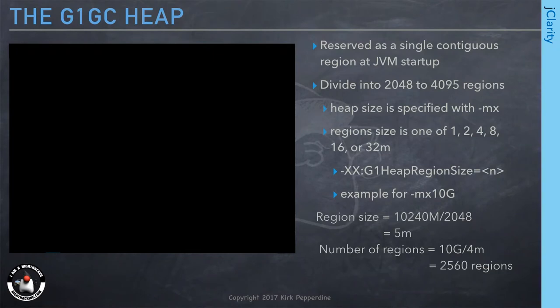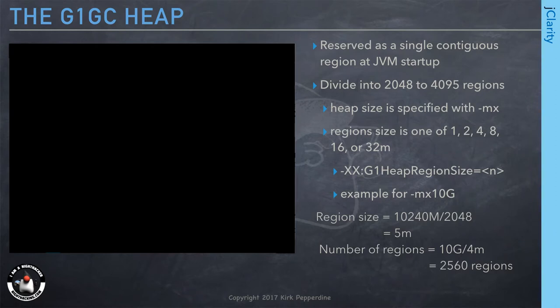The G1 GC collector is going to reserve heap in a single chunk. Technically, it reserves a contiguous amount of heap from C heap, then allocates from that reserved amount what we call Java heap. That's our primary data structure. We divide that heap up into a number of equally sized regions. The regions are going to be either 1, 2, 4, 8, 16, or 32 megabytes in size depending on how the maths work, or how you set it yourself.